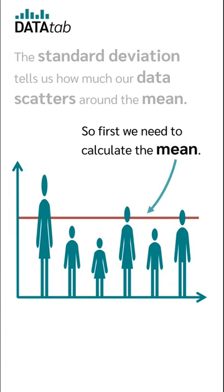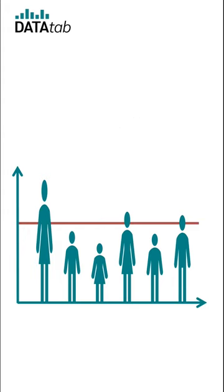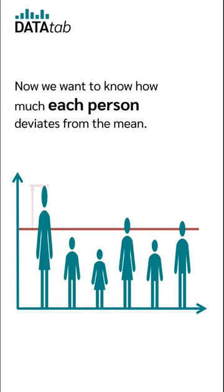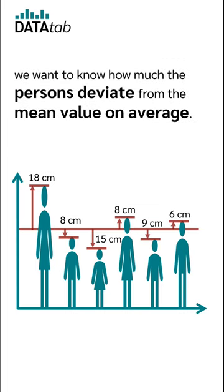So first we need to calculate the mean. Let's say we get a mean value of 155 centimeters. Now we want to know how much each person deviates from the mean. But we are not interested in the deviation of each individual person from the mean value — we want to know how much the persons on average deviate from the mean value.